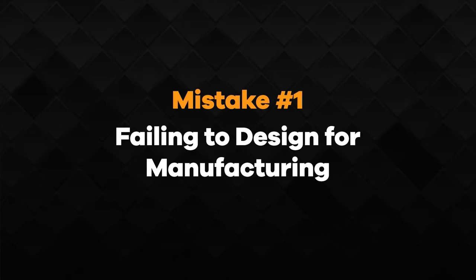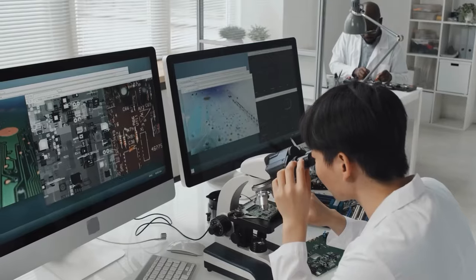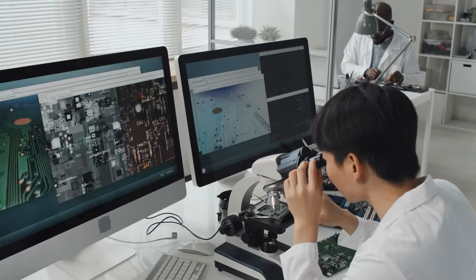Mistake number one is failing to design for manufacturing. People tend to underestimate the complexity of developing a new physical product, and they also underestimate the complexity of manufacturing it even more. For many products, it takes nearly as much time — sometimes even more — to get manufacturing up and running as it does to develop the product. Manufacturing setup can also cost much more than all of the development costs for some products.